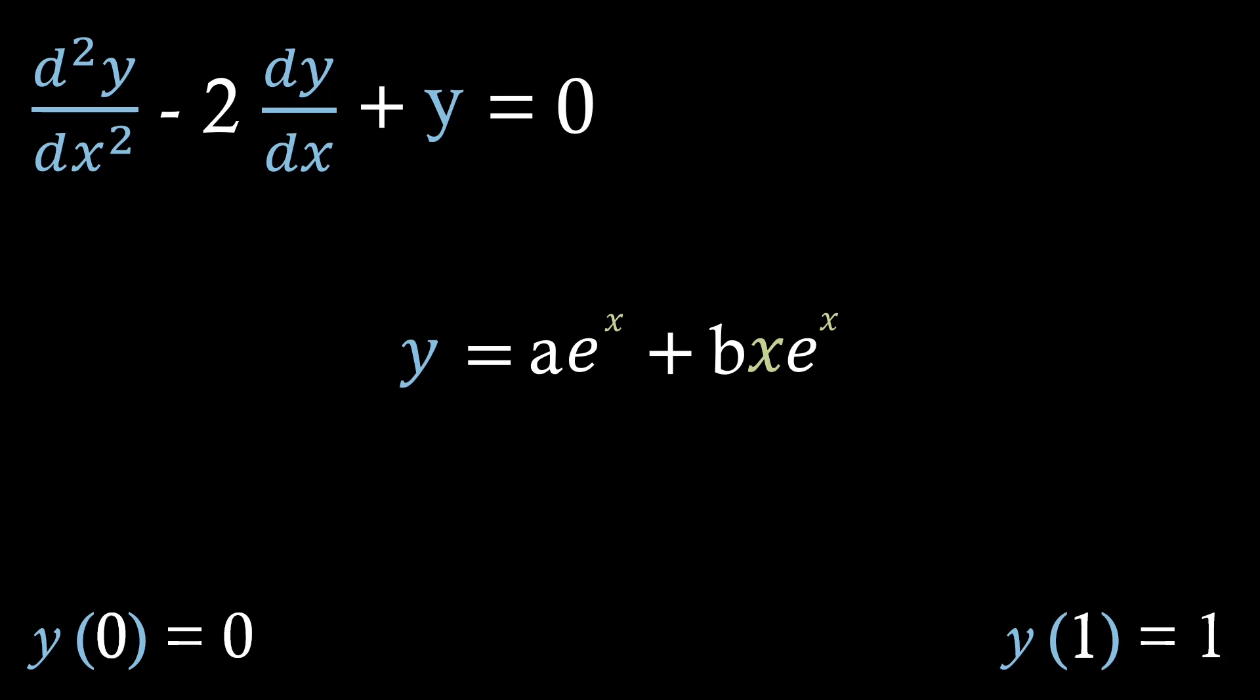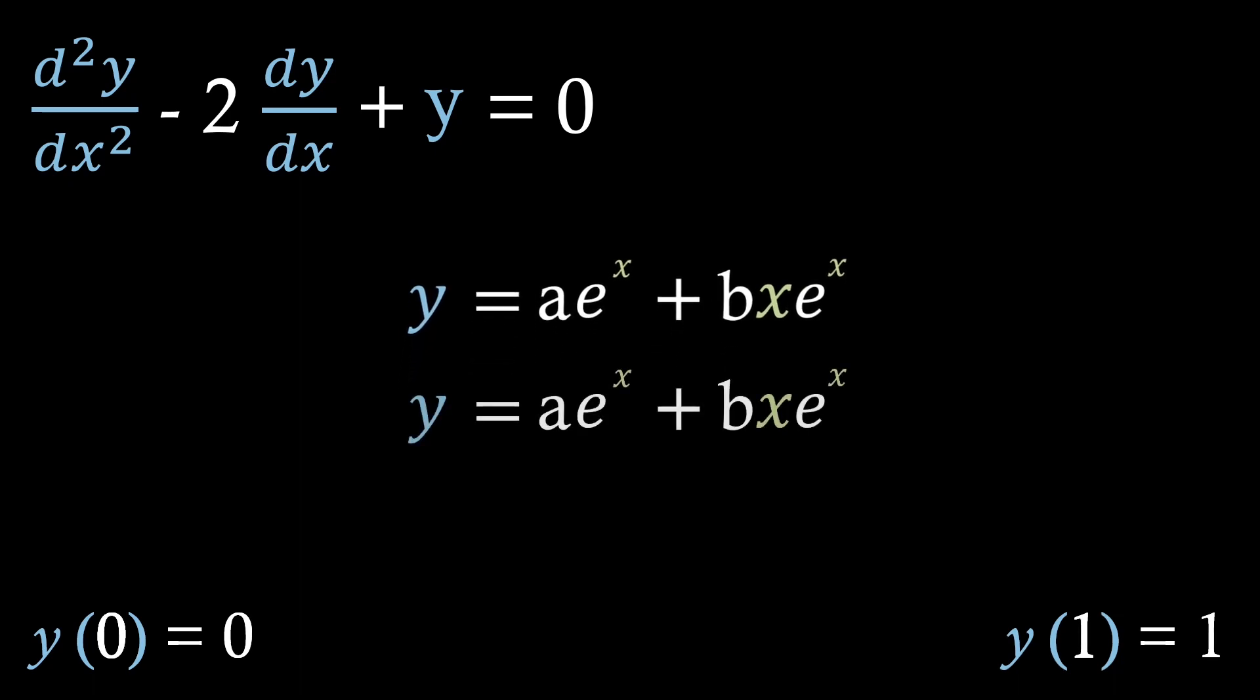Again, as this is a value problem, we need to find a and b for our particular solution. Now I'm going to duplicate our general solution so it's easier to visualize. Then if we use our first condition, we can see we get this expression, which just simplifies that a equals 0.